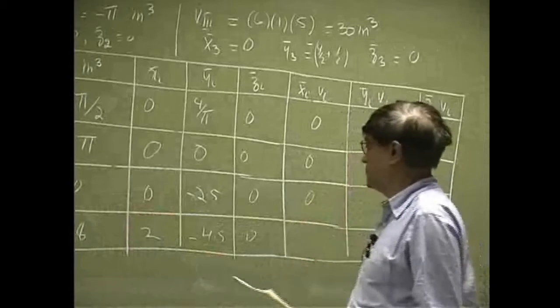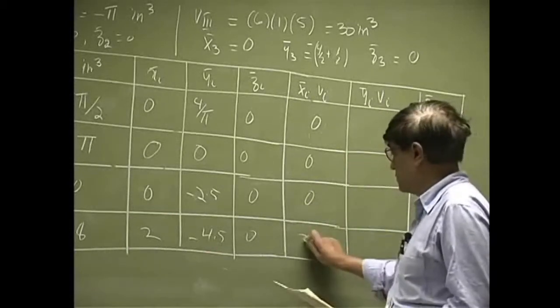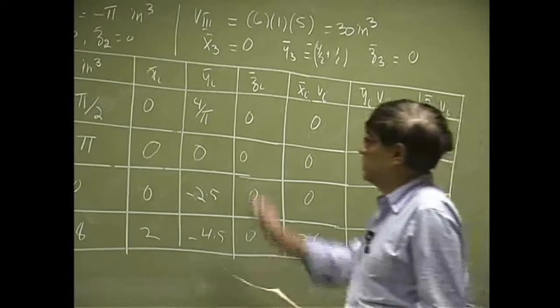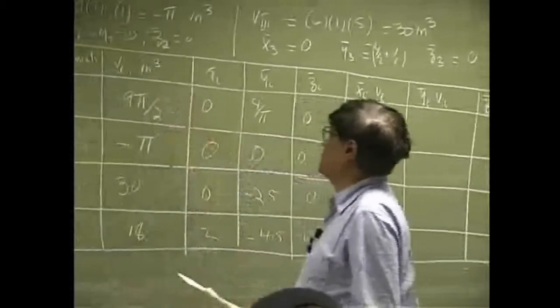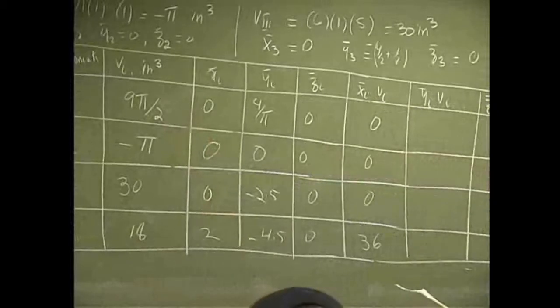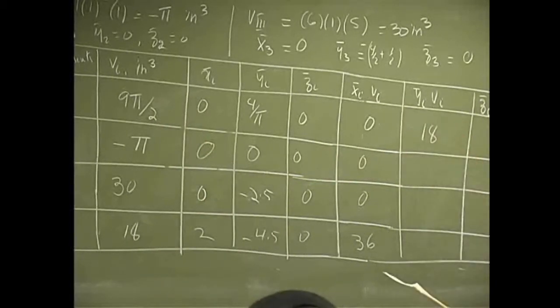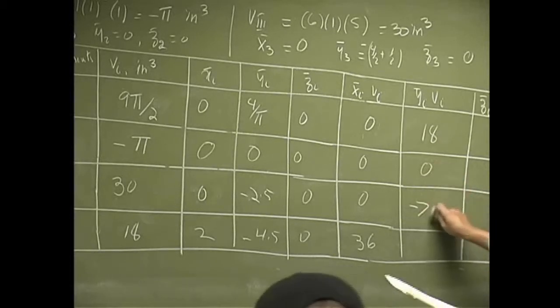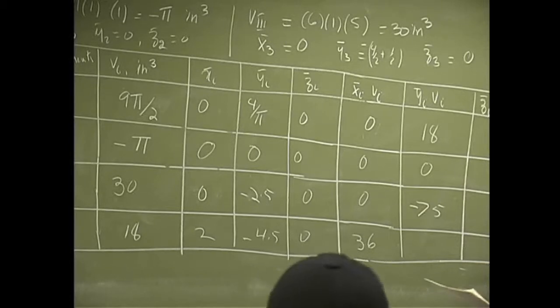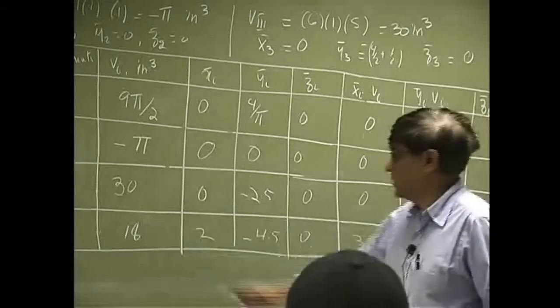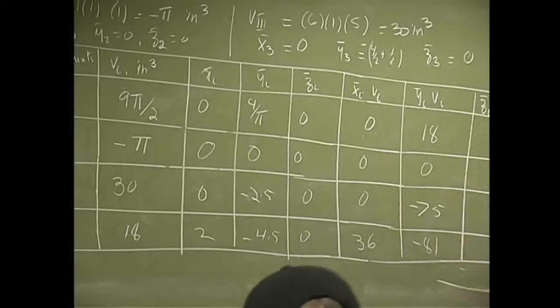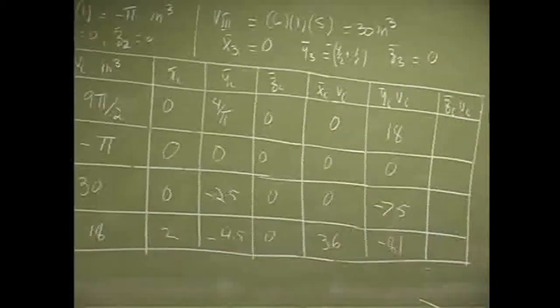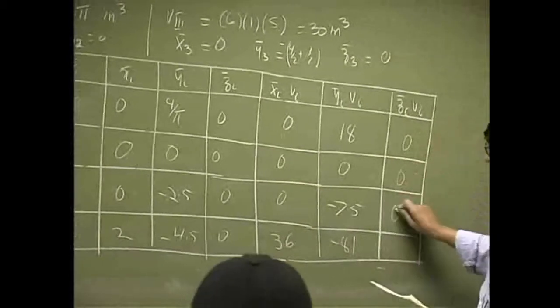This also gives you zero. And the last one will be 36. Then you go this times this. Negative 81. Then everything here is basically zero, so everything goes to zero. Then everything here is basically zero, so everything goes to zero.